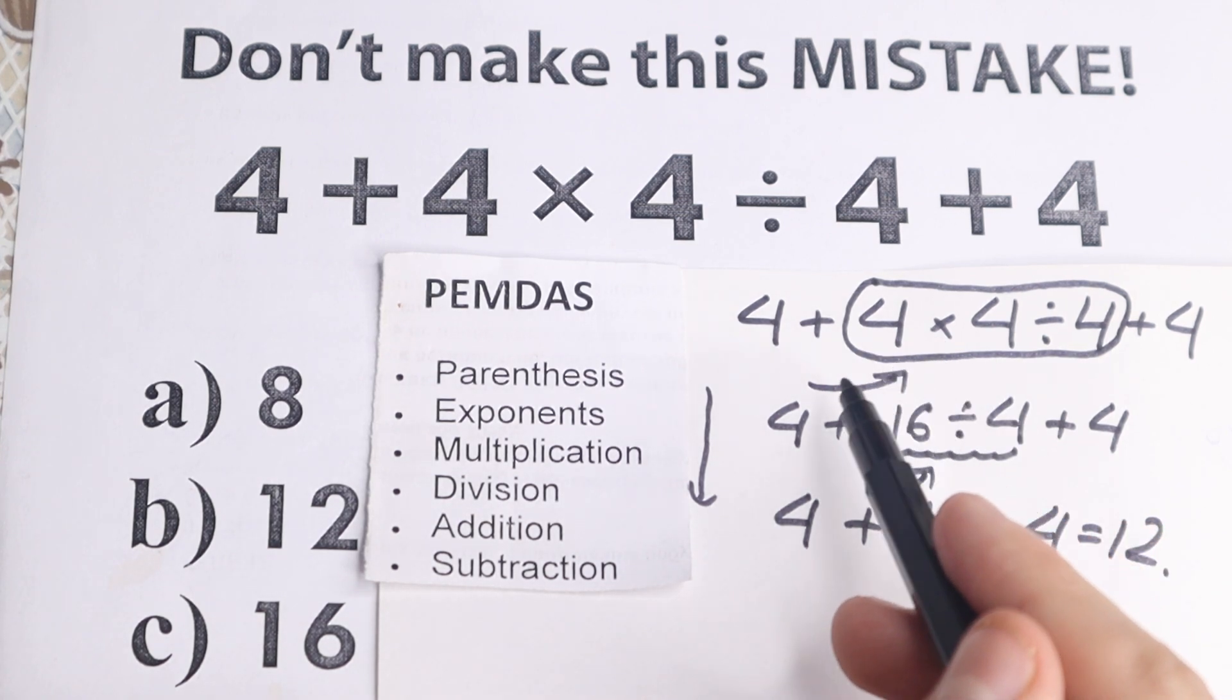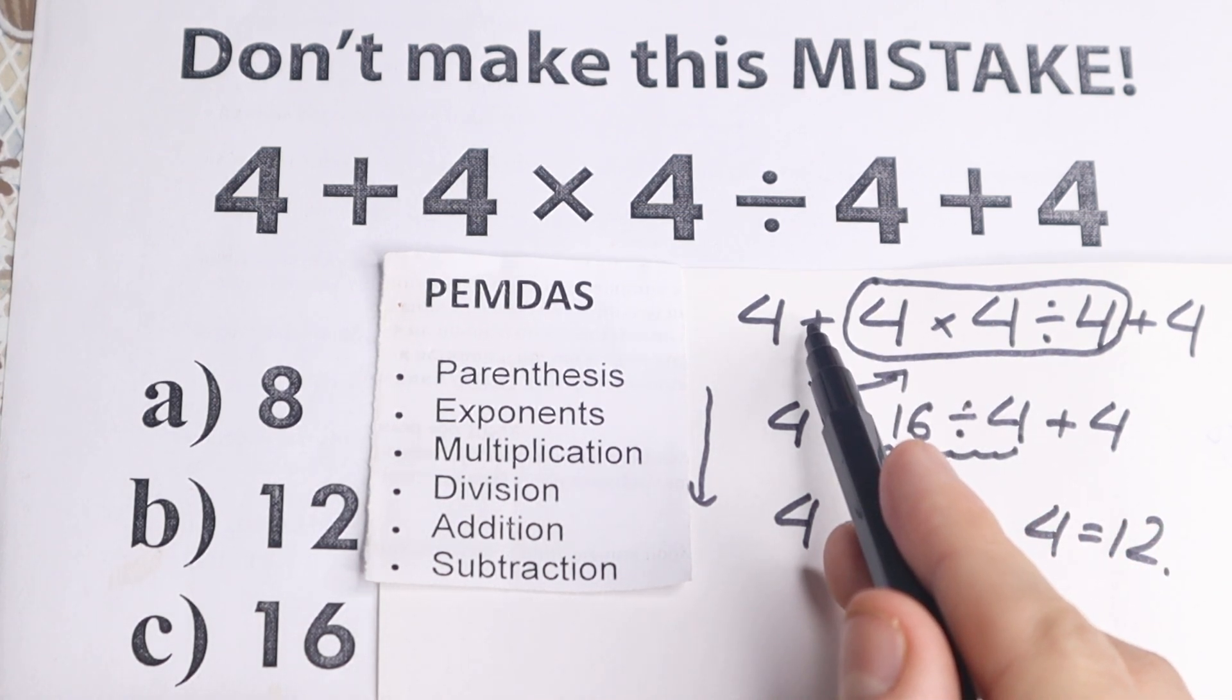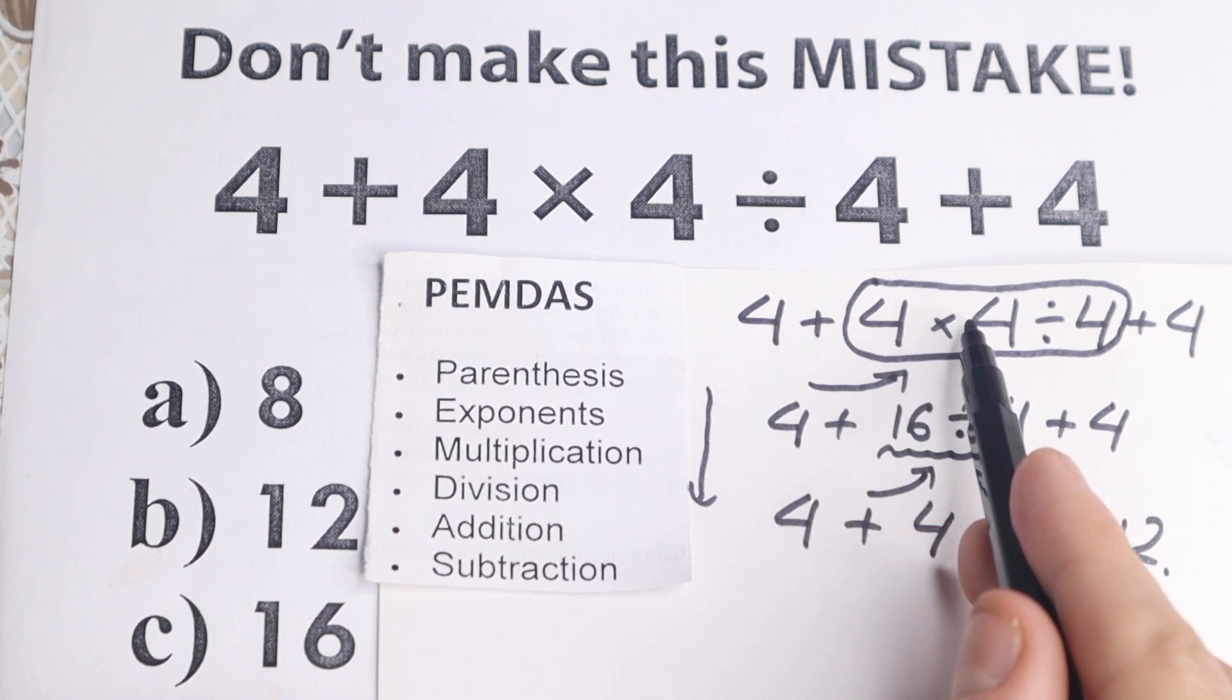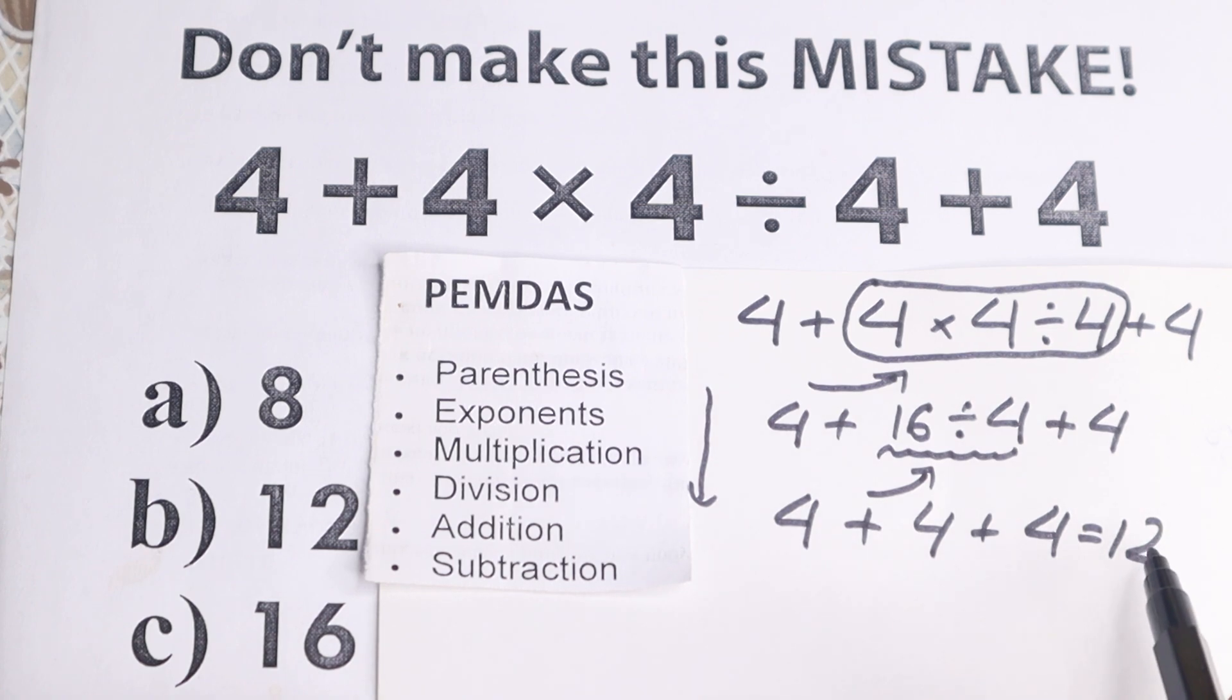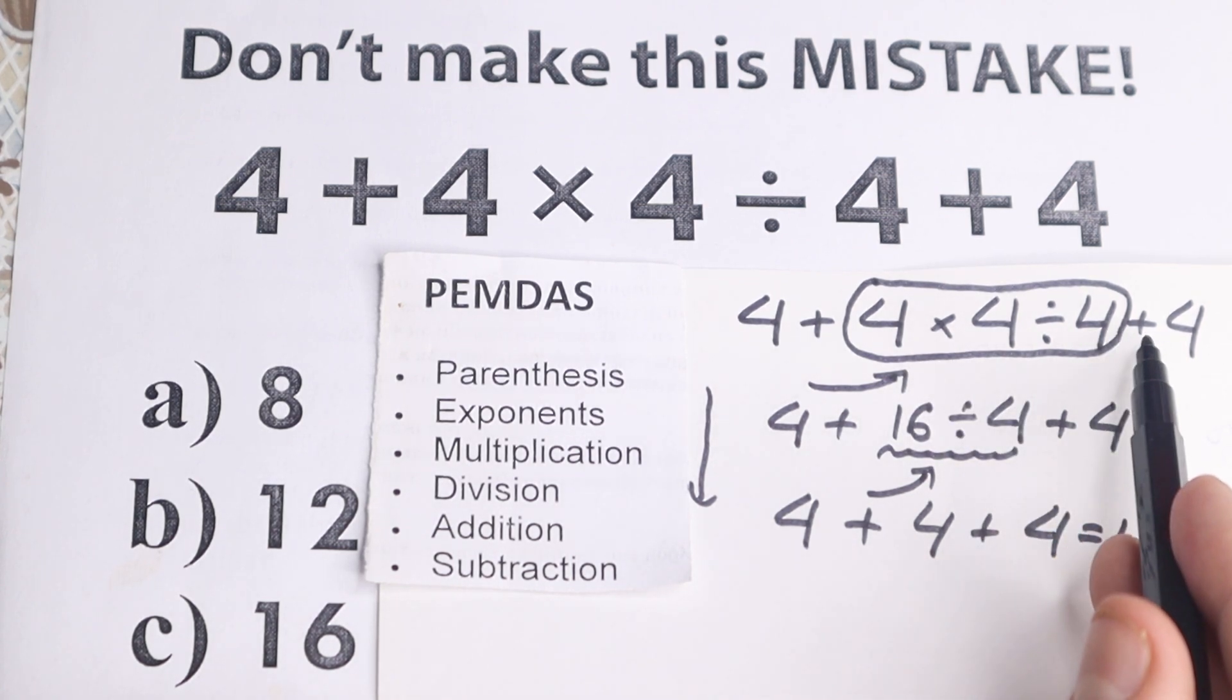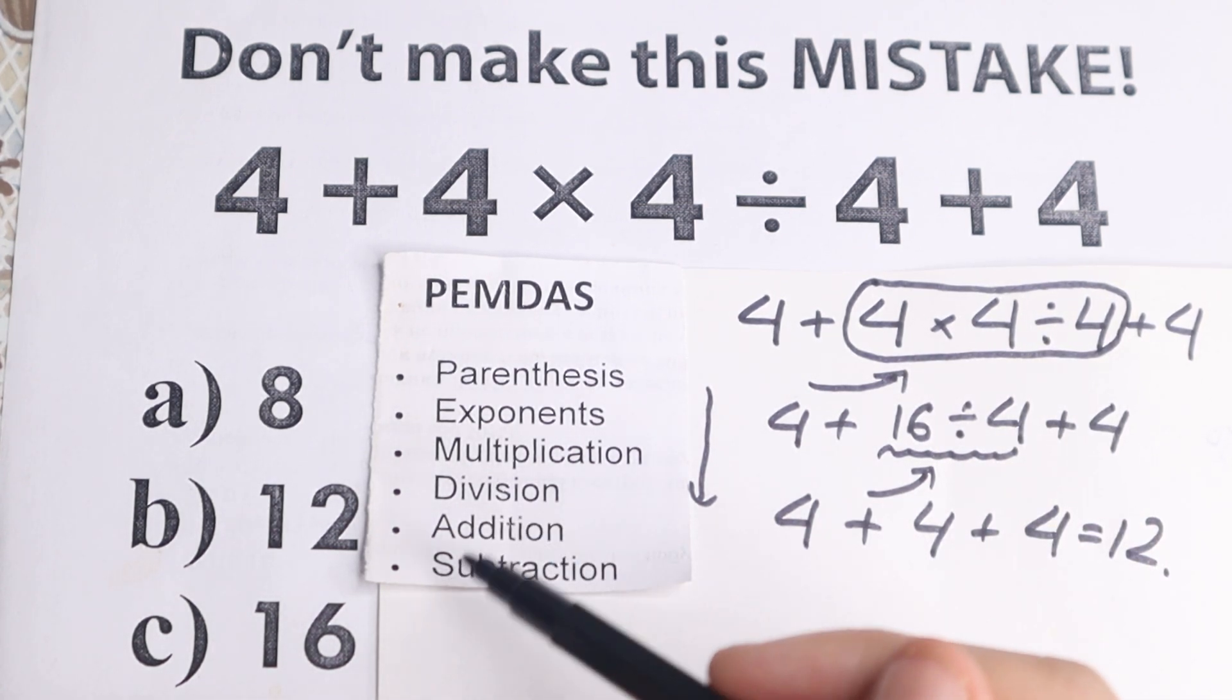A lot of students do this common mistake, they start with this addition, it looks like 8 times 4 is 32, this looks like 8 plus 4, this is the same 12, a lot of students start with this division, with this division, and as you can see, a lot of combination.